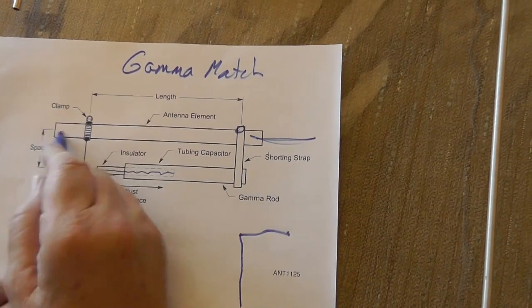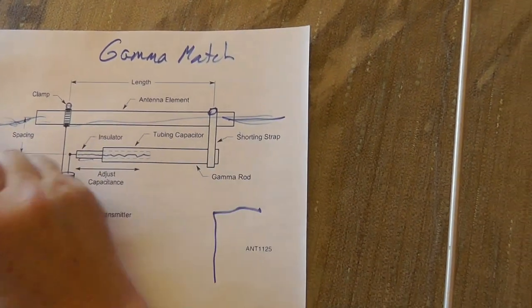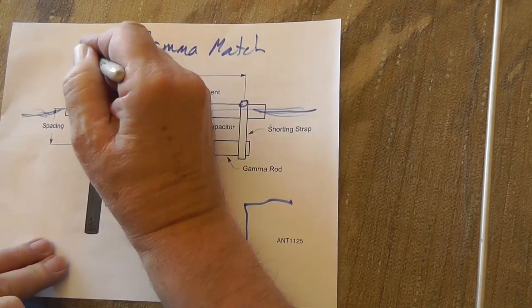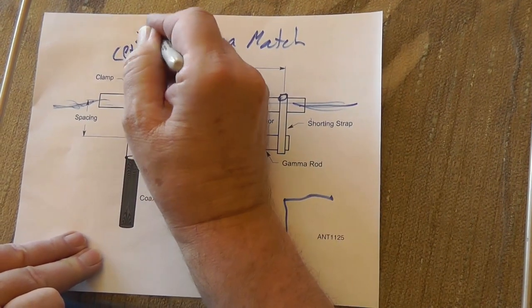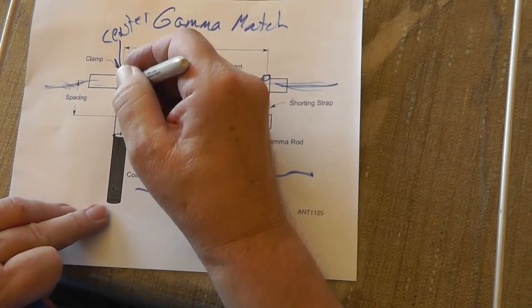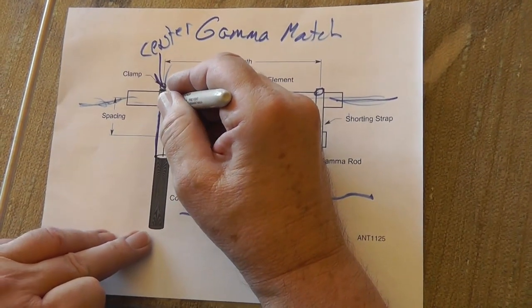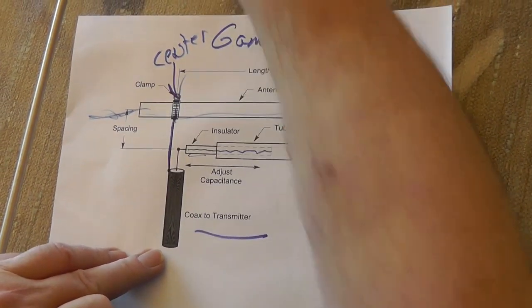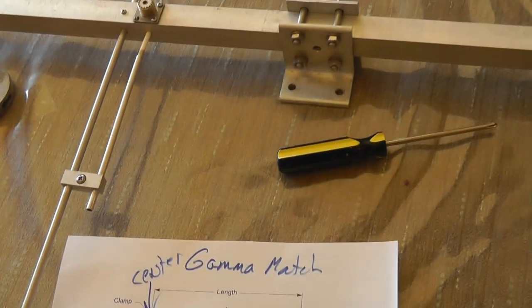you've got the middle element. See, this is the middle element. This is the center. This is the coax. The outside of the shield of the coax goes to the center, which is right here.